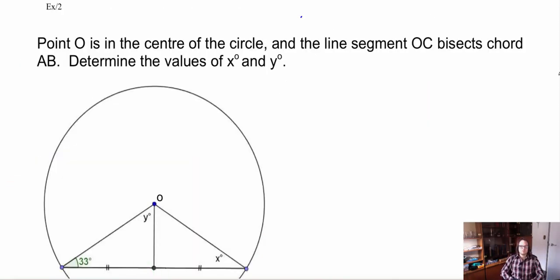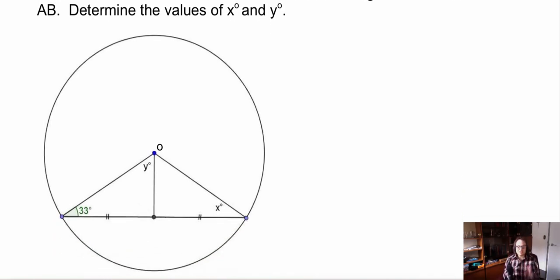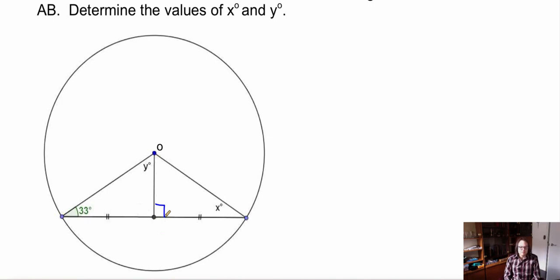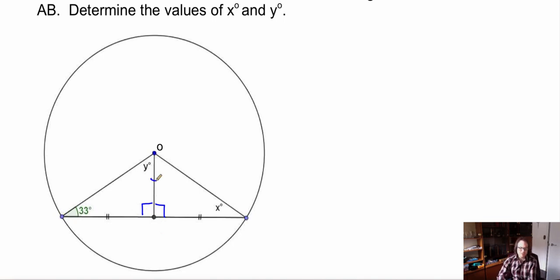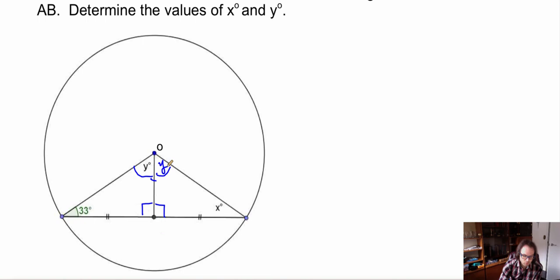In this second example, point O is the center of the circle, and line segment OC bisects chord AB. We need to determine the values of x and y. Since a line from the center that bisects a chord must be perpendicular to that chord, this line is perpendicular — meaning we have a 90-degree angle here, and the other side must also be 90 degrees. Because we have two equal angles and two equal sides, these must be congruent triangles, so the corresponding angles must match: y appears in both, and x must equal 33 degrees.